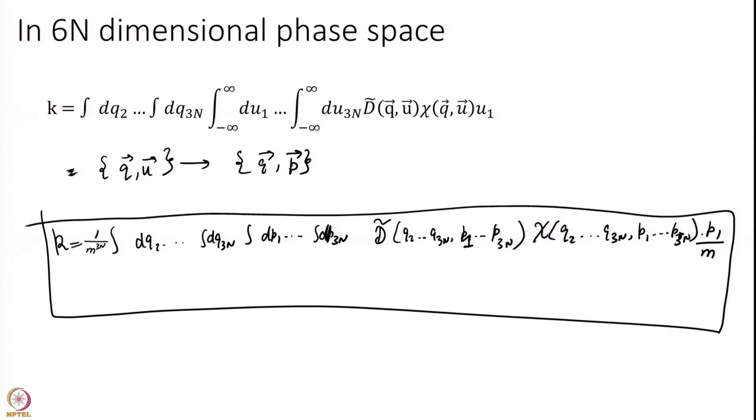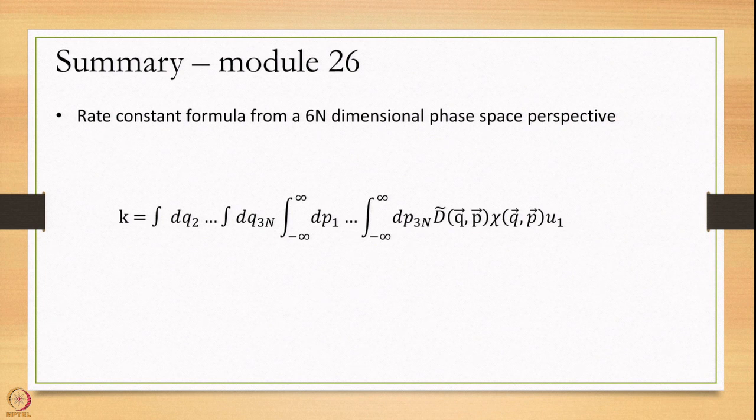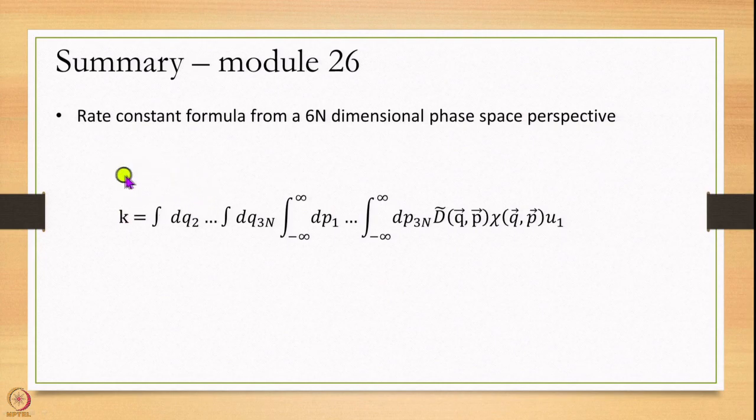And this formula actually makes very few assumptions. All I have really assumed is that a dividing surface exists and classical mechanics. Only 2 assumptions have been made, no idea about equilibrium, no idea that you have no recrossing assumption. All that is not made only 2 assumptions I have made that the trajectories are classical and a dividing surface does exist over which I am integrating. We have this more general formula with us today and what we are going to do in the next module is to use this formula and make a few more assumptions that are needed to get to transition state rate. Thank you.